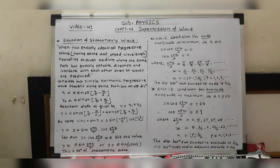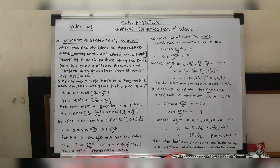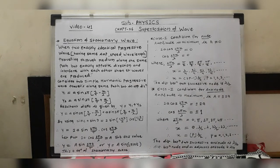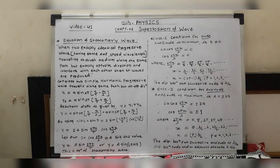Now we have to find the equation of stationary waves. To find this equation, we consider two simple harmonic progressive waves which travel along the same path — along the positive direction of the x-axis — but in exactly opposite directions. These two waves in terms of displacements are as follows.